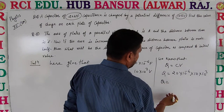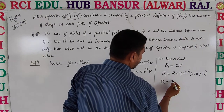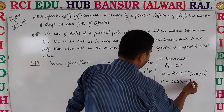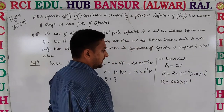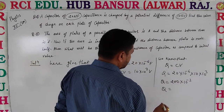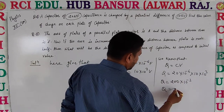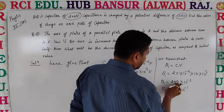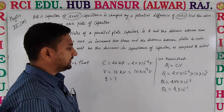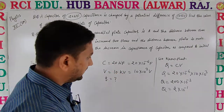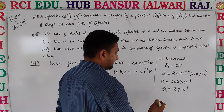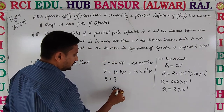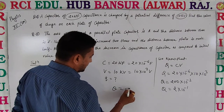So Q is equal to 10 to the power negative 3, which gives Q equal to 2 multiply 10 to the power negative 1, which is 10 to the power 2 and negative 3. So Q is equal to 0.2 coulombs.